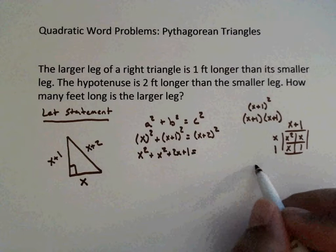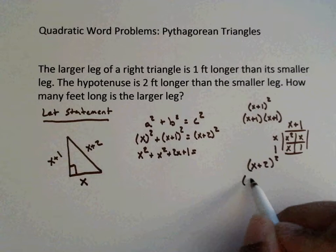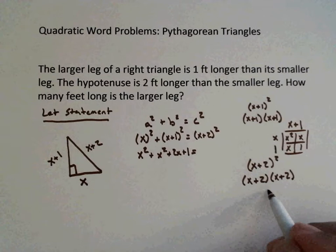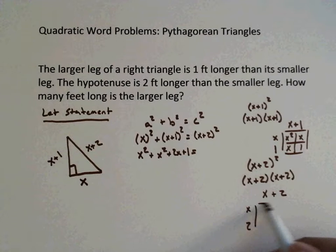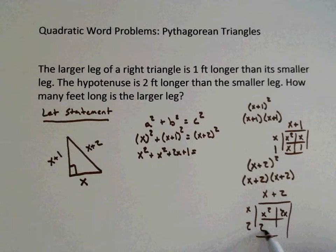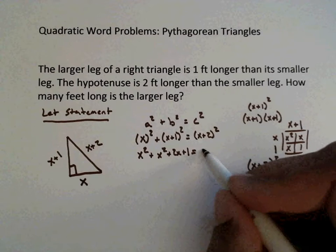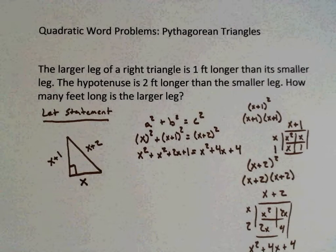And then we do the same thing with X plus 2. X plus 2 squared means we write it out as X plus 2 times X plus 2. We get X squared, and we get 2X, and we get 2X, and we get 4. So we get X squared plus 4X plus 4.